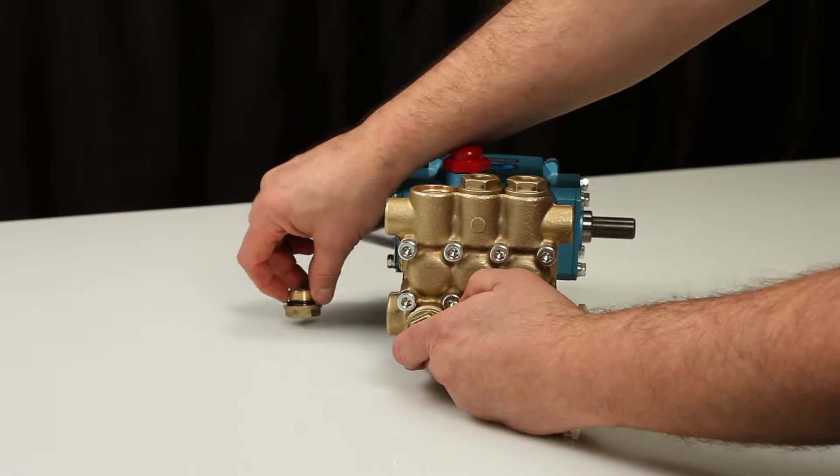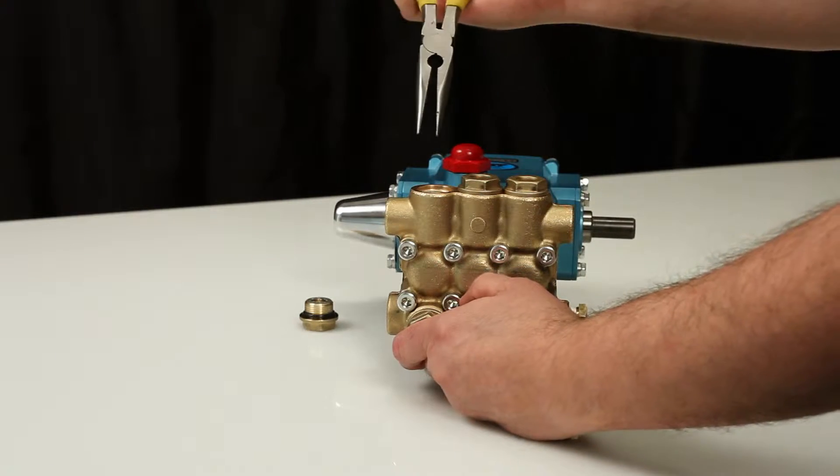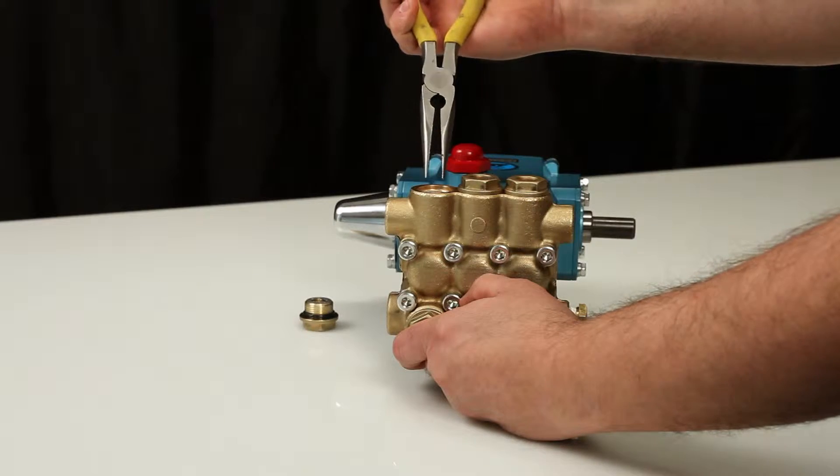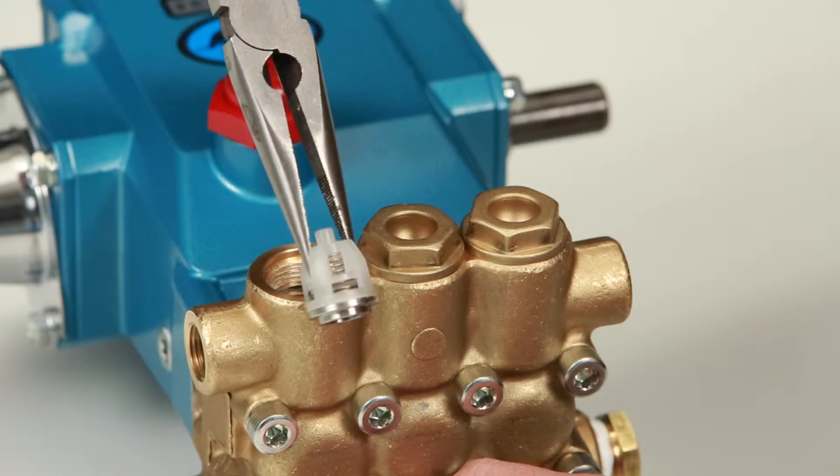A new O-ring is included with the valve kit. To remove the valve assembly, use needle-nose pliers grasping the top of the spring retainer. Give a small twist while pulling away from the manifold to remove.